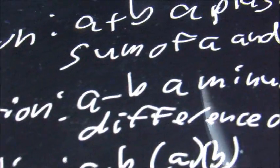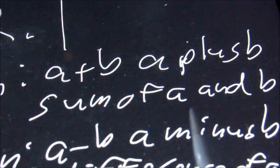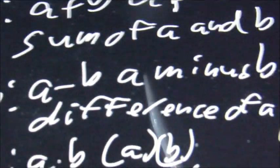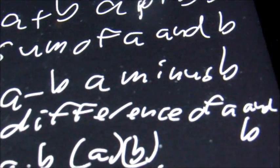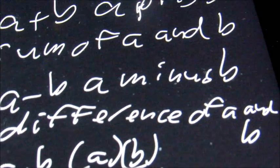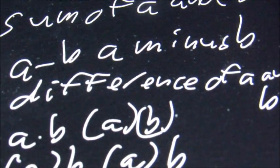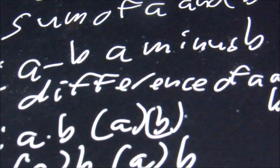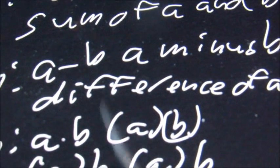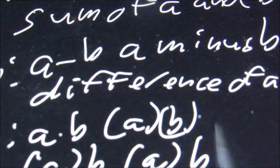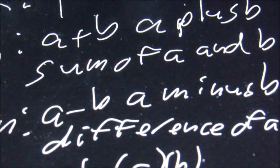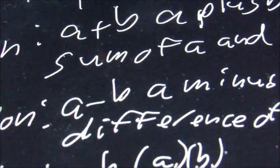For subtraction, we have A minus B, written out as A minus B. You could also see difference of A and B. Make sure that you have A minus B when you have that — the difference of two numbers is the first number minus the second number.